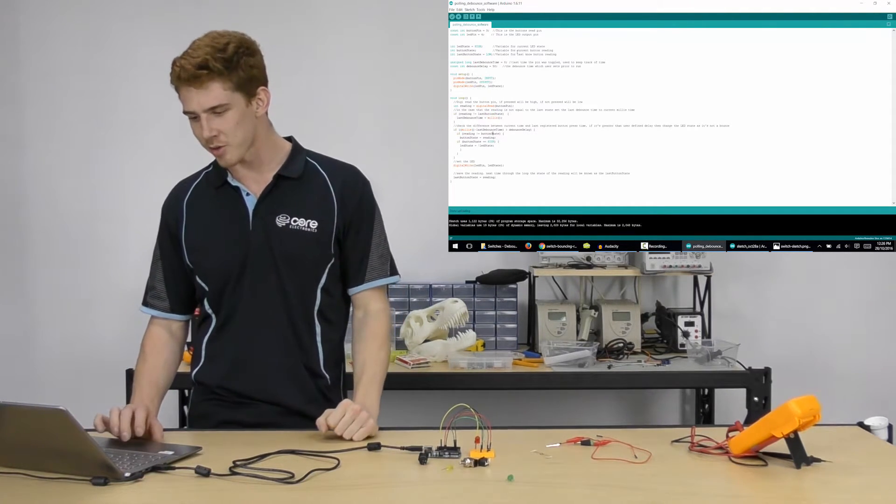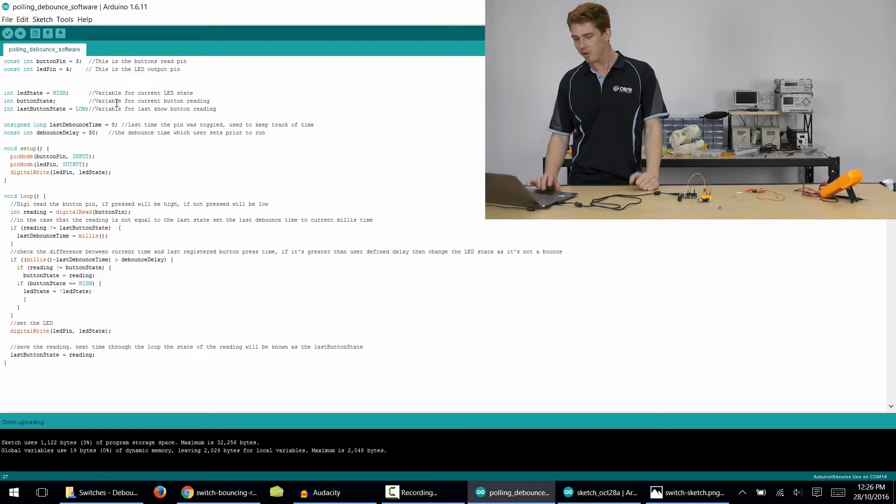As far as the Arduino sketches that we're used to writing go, it's a pretty simple one. We're just going to define all our values for our buttons and pins, so the button pin will be pin 3 like we said before, and the LED pin will be pin 4.